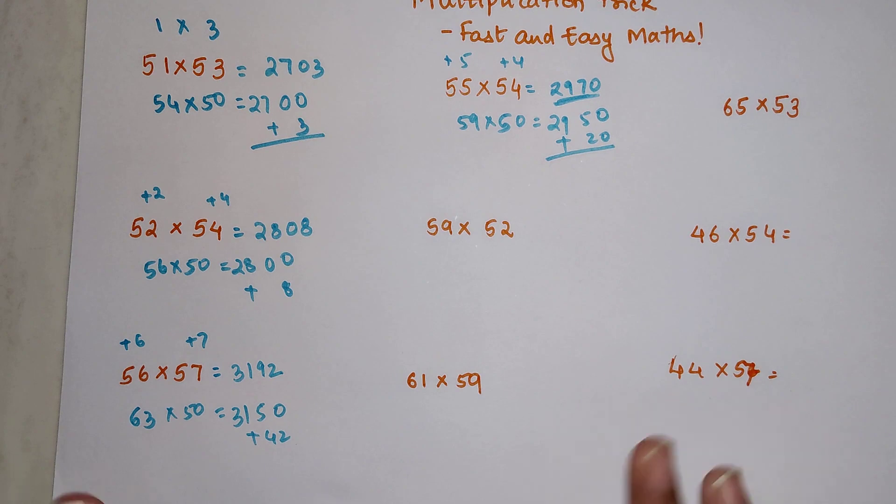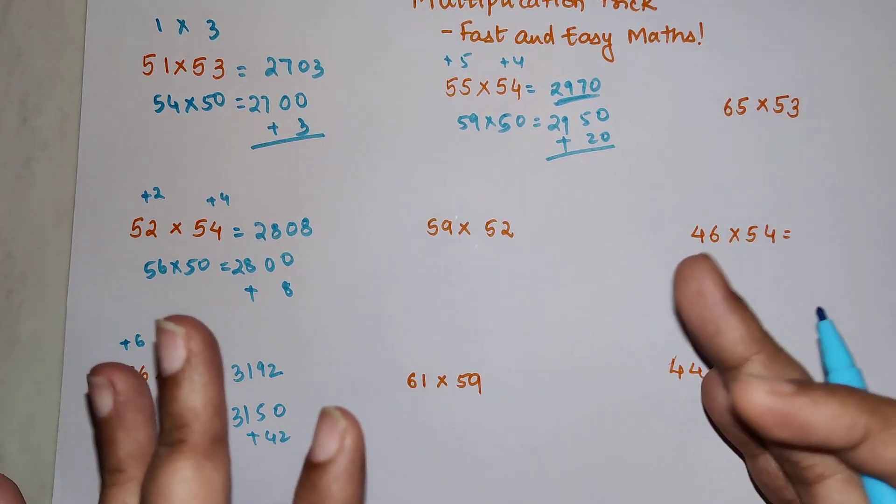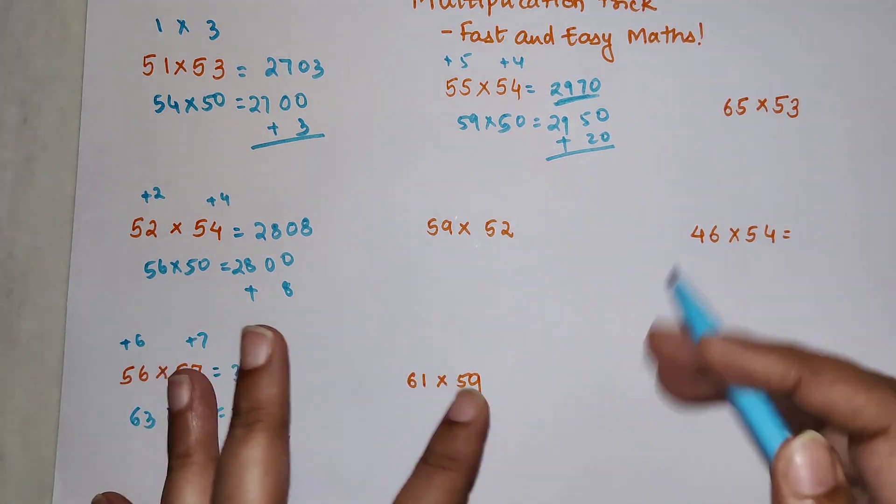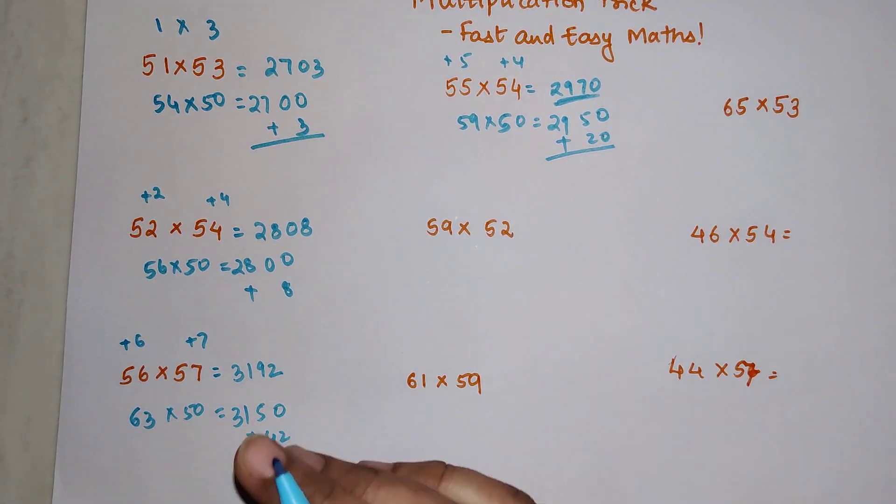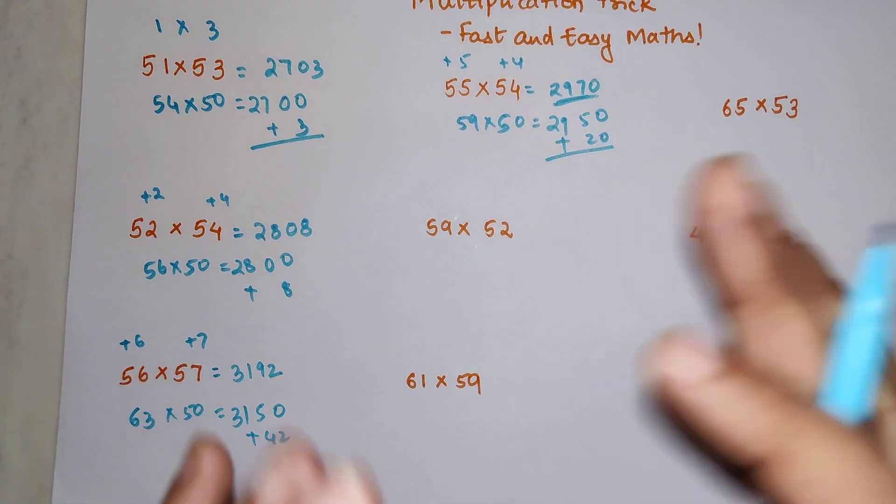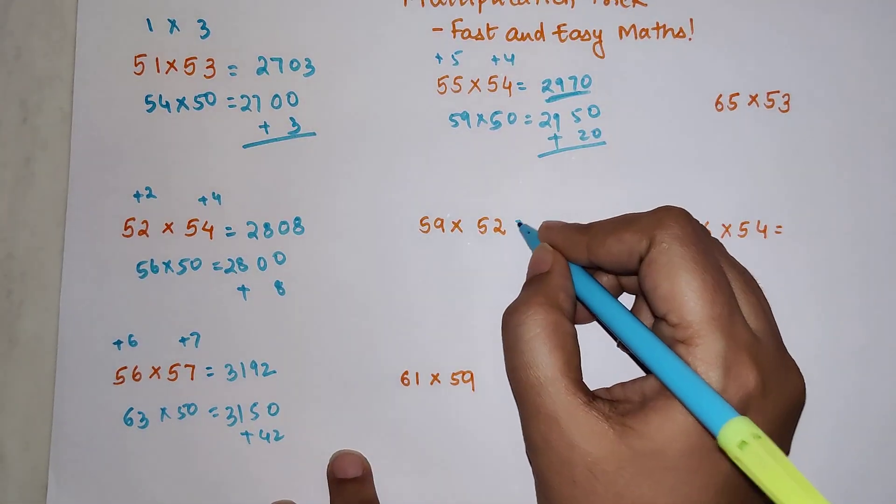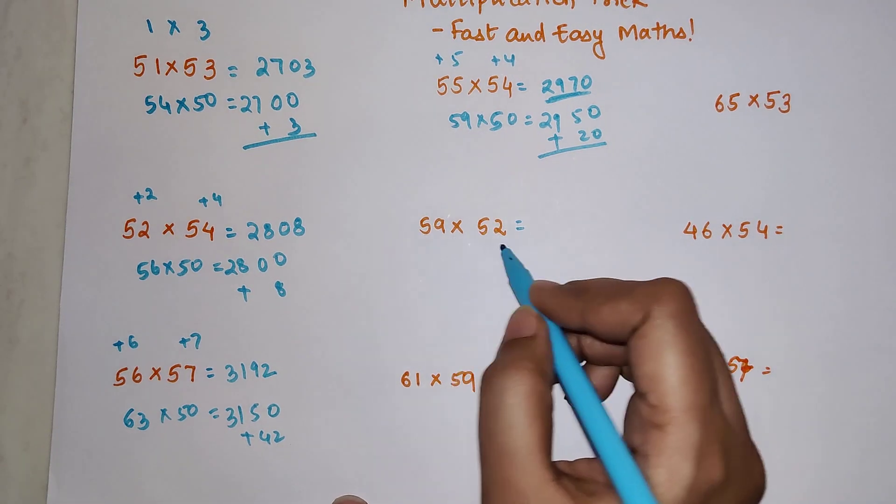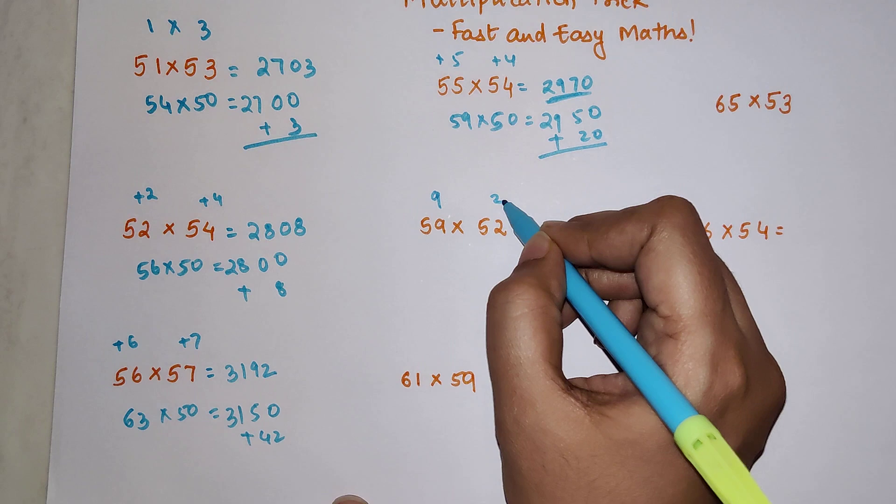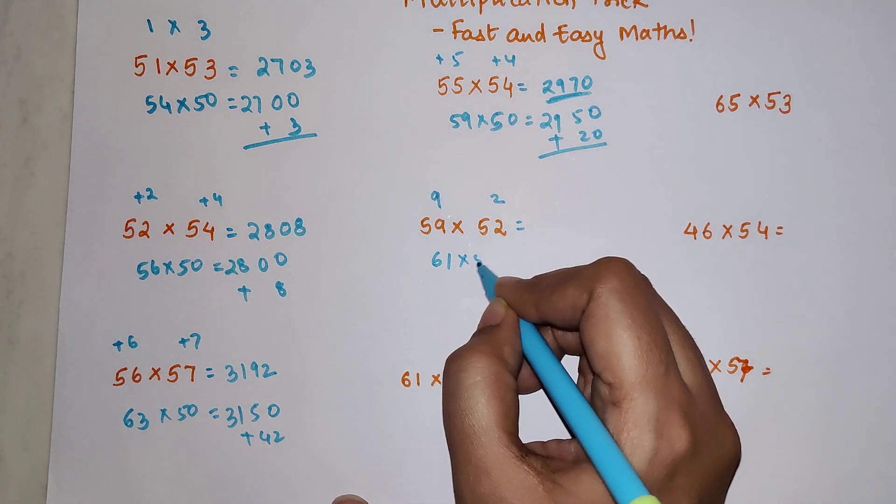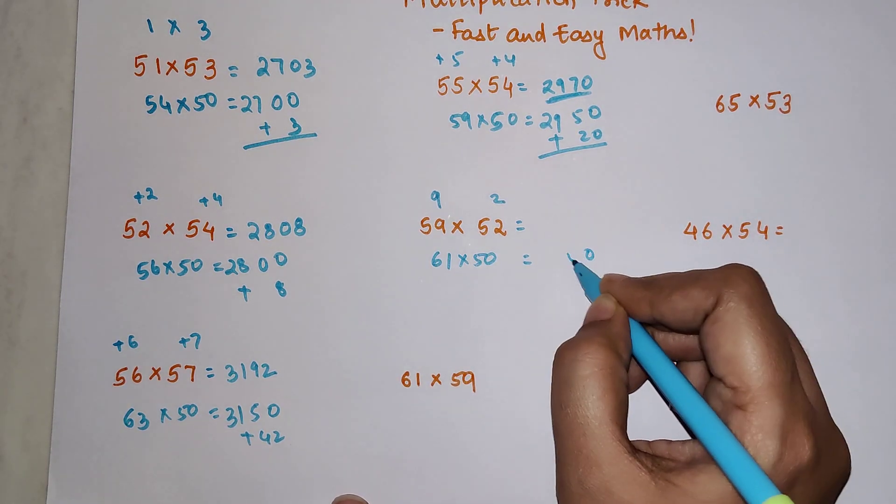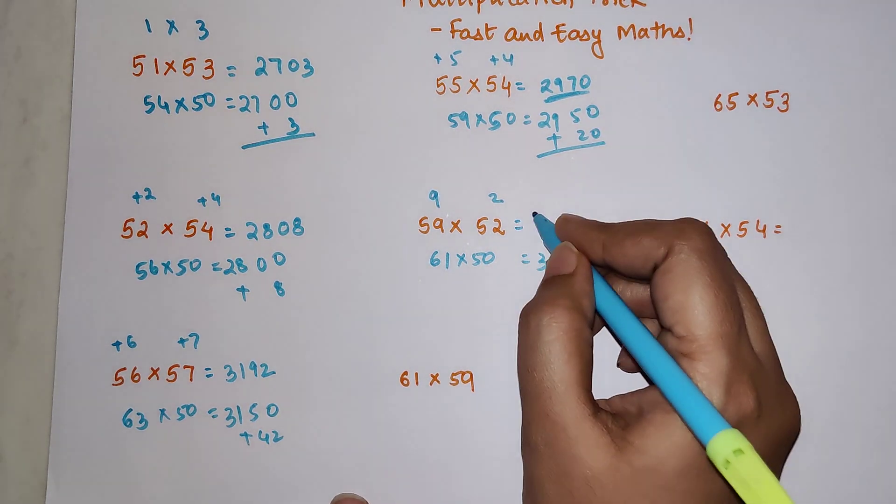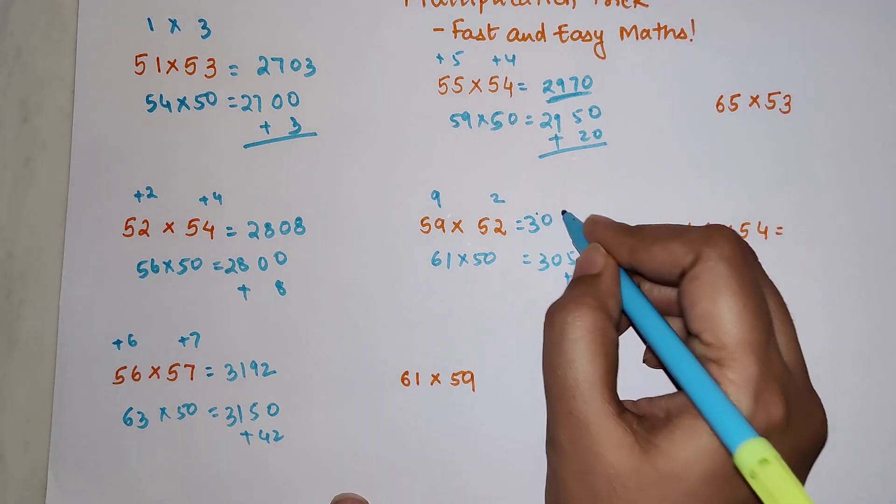You can do this trick mentally also, but first you need to be very sure you can do it when writing with pen and paper without making any mistakes. You can definitely do this mentally, but you need a little bit of practice. Now the next one: 9 and 2, so when you add you get 61 times 50, which is 3050. To that you add 18, so your answer is 3068.